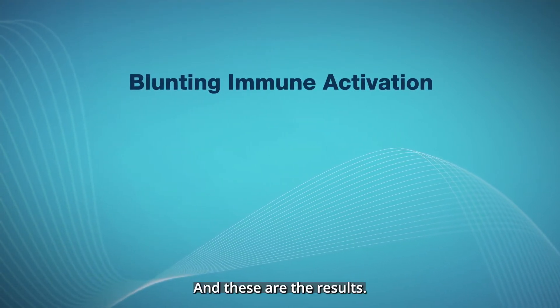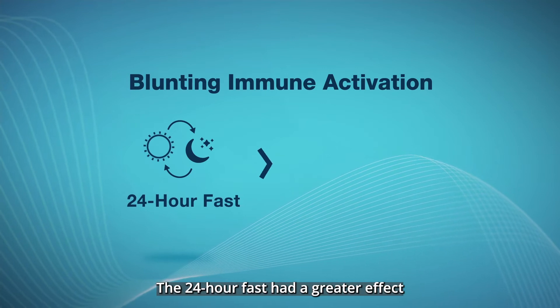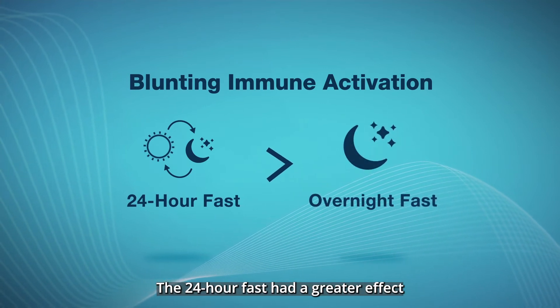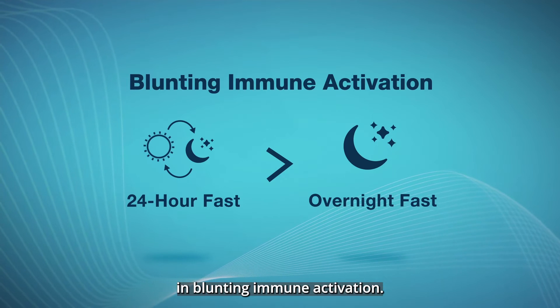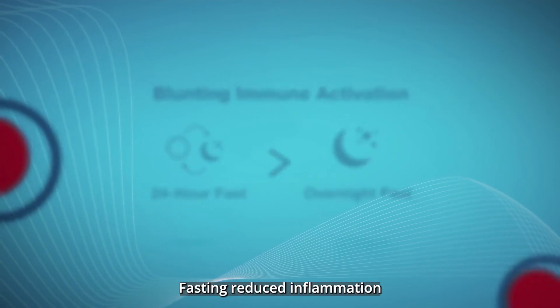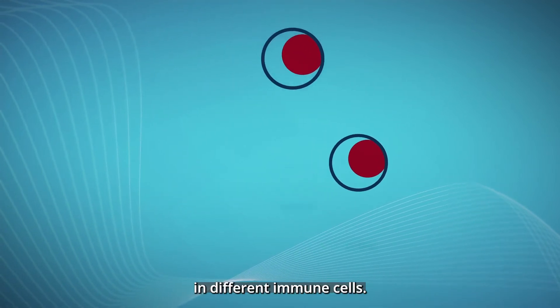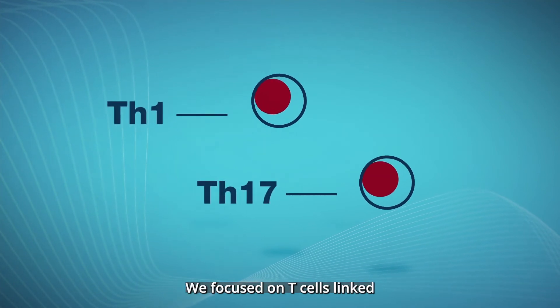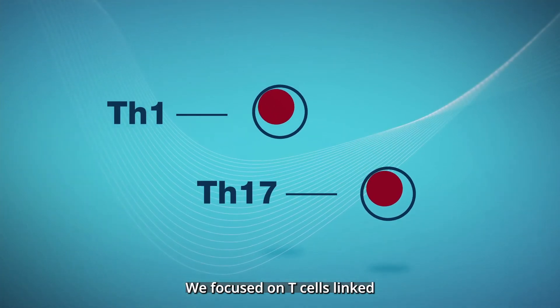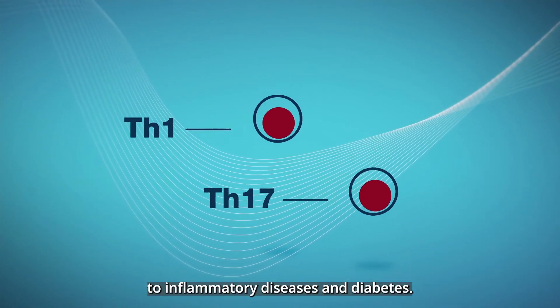And these are the results. The 24-hour fast had a greater effect than the overnight fast in blunting immune activation. Fasting reduced inflammation in different immune cells. We focused on T cells linked to inflammatory diseases and diabetes.